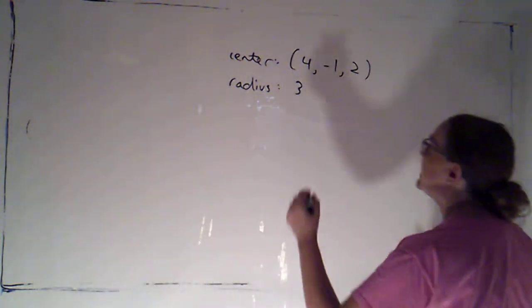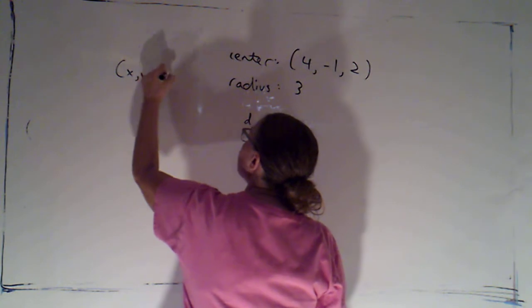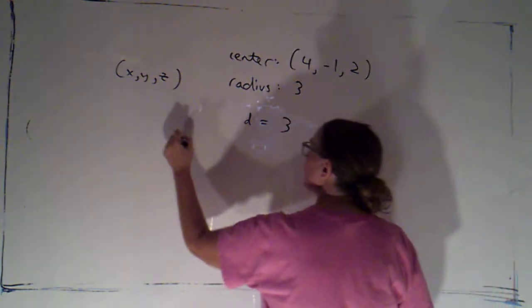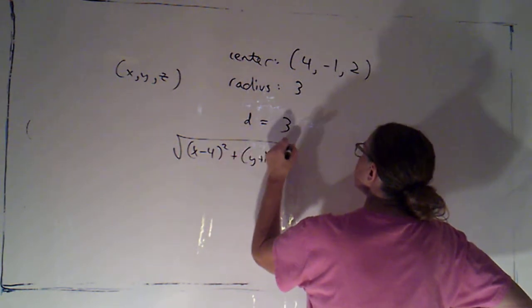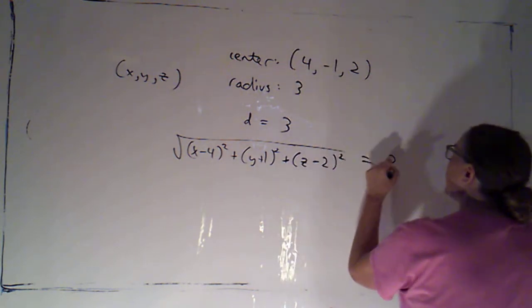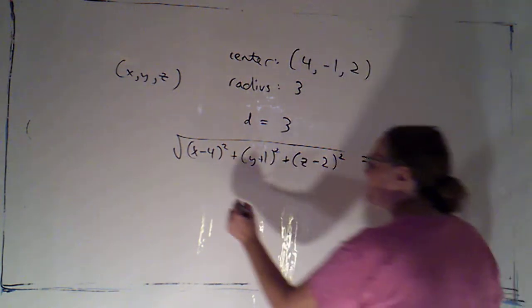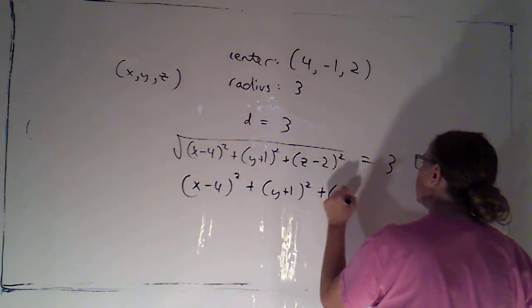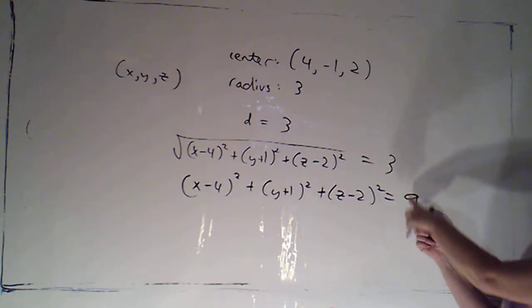Welcome back. Okay, so I'm just going to say the distance has to equal 3, where the distance is between an arbitrary point on the surface of the sphere and this very specific point. By the distance formula, that would be the square root of (x minus 4) squared plus (y plus 1) squared—that's y minus a negative 1—plus (z minus 2) squared. That distance has to equal 3. That works, but it's a whole lot easier if I just square both sides and say (x minus 4) squared plus (y plus 1) squared plus (z minus 2) squared is equal to 9. And these two equations are equivalent.